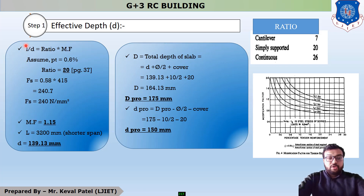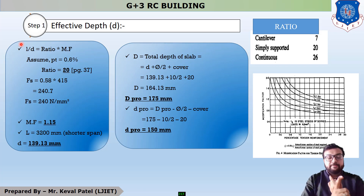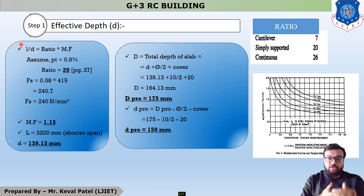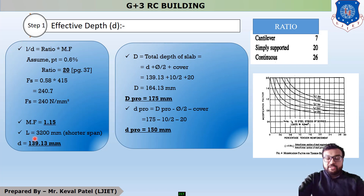The value of L is the shorter dimension. We have two dimensions: 3.2 m and 9.2 m, so the shorter dimension is 3.2 m = 3200 mm. After putting all values into the equation L/D = ratio × MF, we get effective depth small d = 139.13 mm.